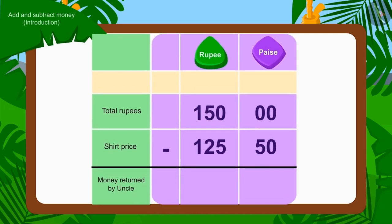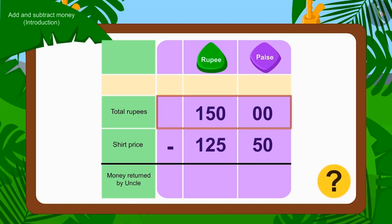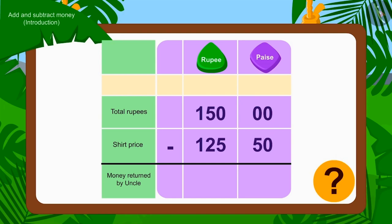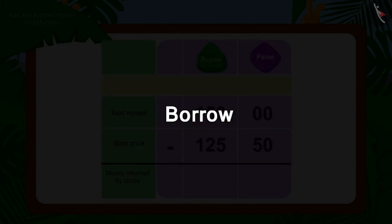We can write it as subtraction in this way. While subtracting, we first subtract the number of paise. Is there any paise for Rs. 150? No. Then how will we subtract 50 paise of Rs. 125.50 from 0 paise of Rs. 150? Do you remember the borrowing process learned in the lesson of subtraction? Here, we will use the borrowing process.